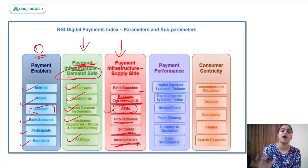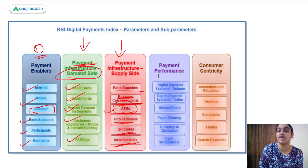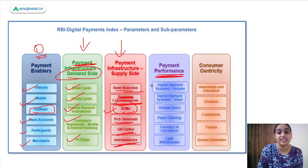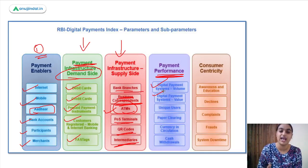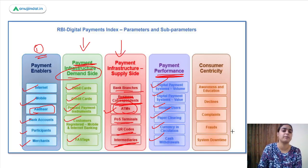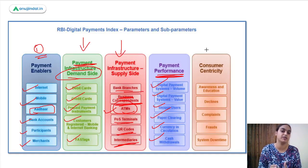The next parameter with the highest weightage is payment performance. How successful are we at making digital payments? What is the extent of good performance being offered? This covers the volume of digital payment systems, the value of digital payments, how much currency is in circulation, how much cash withdrawal is happening, and how much of the paper clearing system is being used. The most important measures are the value and volume of digital transactions.